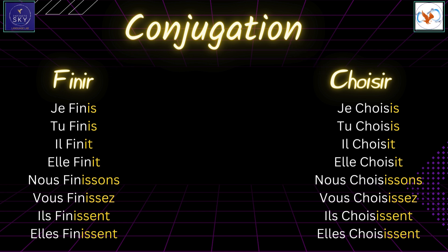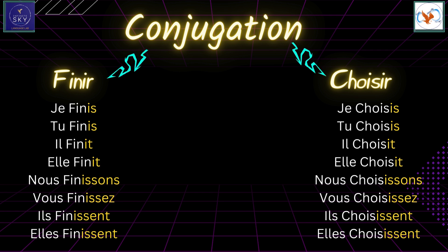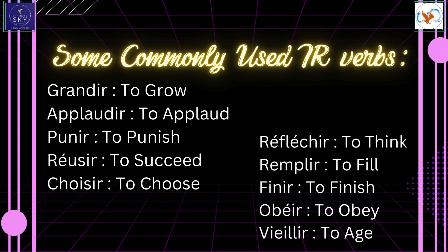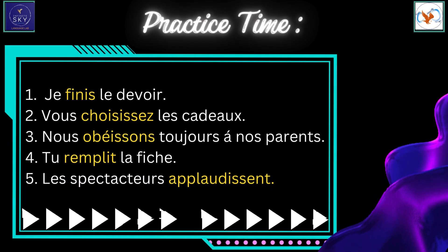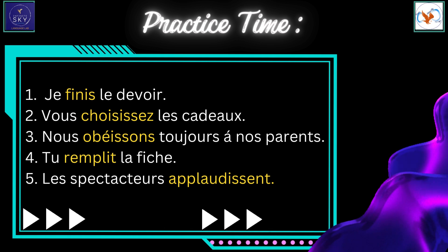And for the verb choisir, meaning 'to choose': je choisis, tu choisis, il choisit, elle choisit, nous choisissons, vous choisissez, ils choisissent, elles choisissent. And here is the list of some commonly used IR verbs. I recommend you to try these conjugations on your own.